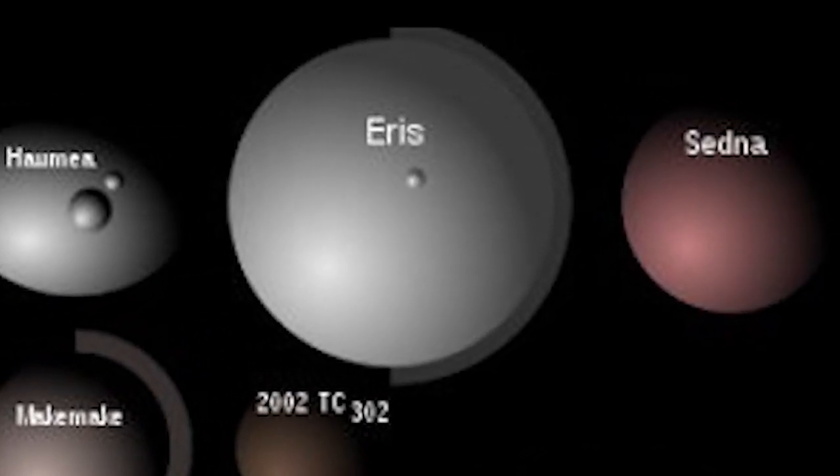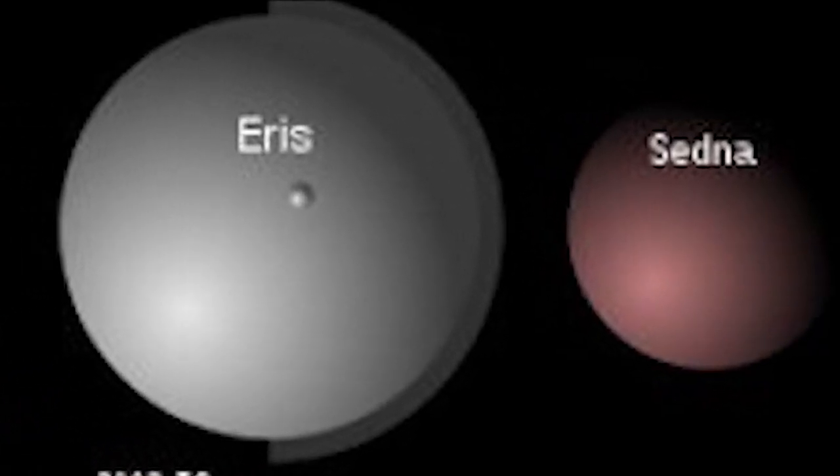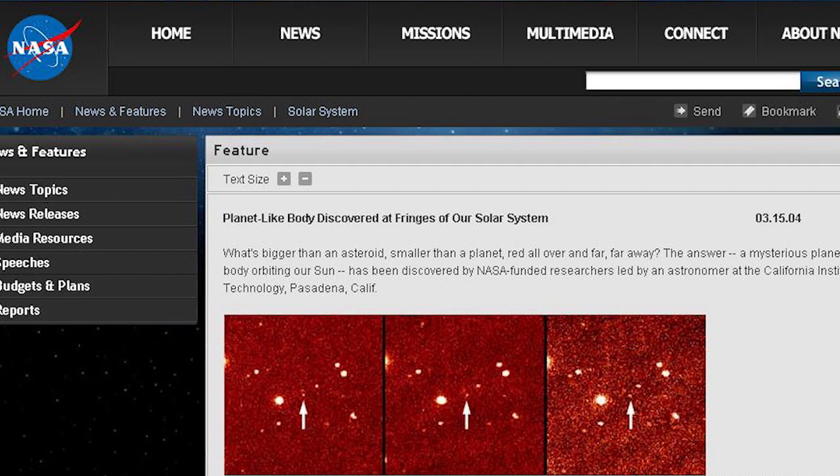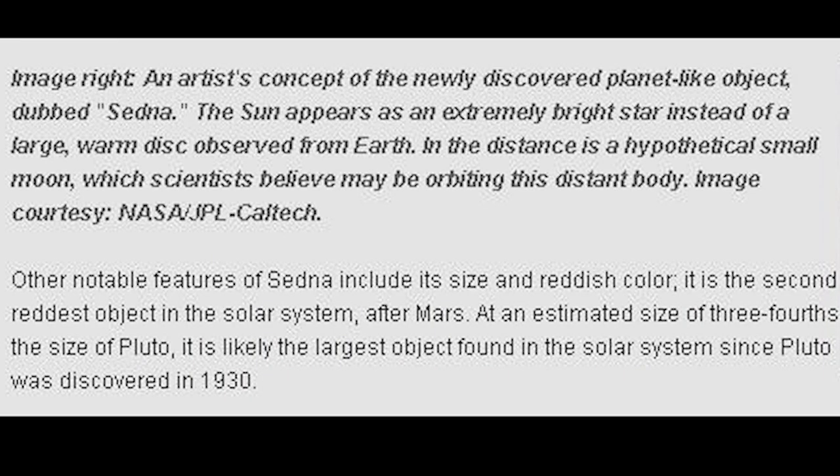And what do you think it is that makes it one of the reddest objects in our known solar system? Sedna is the missing link to a whole lot of things.